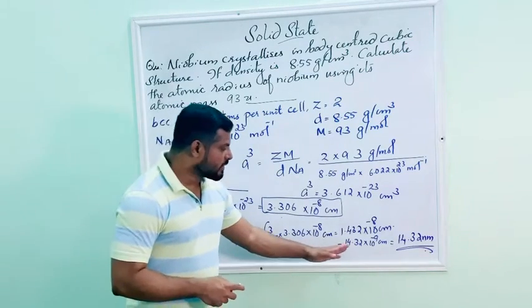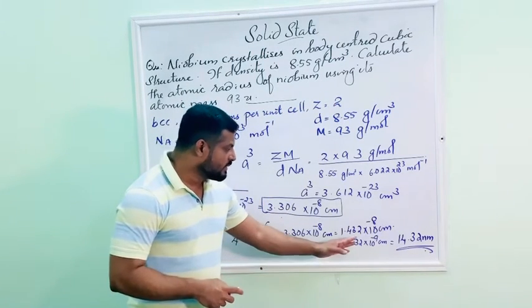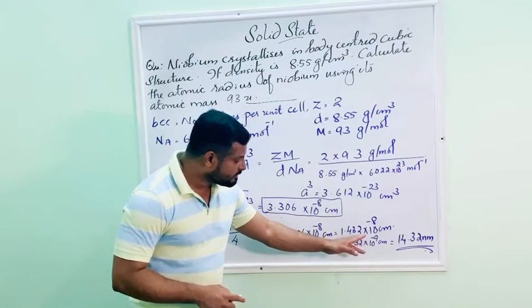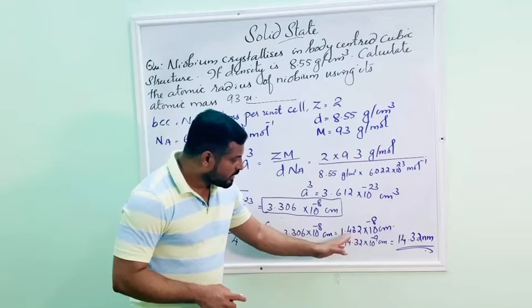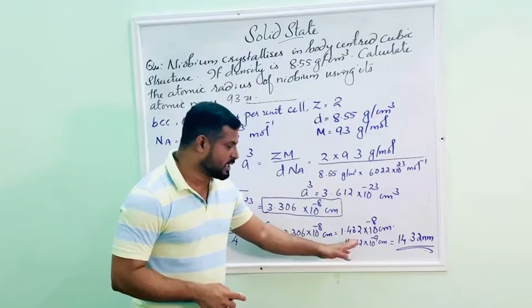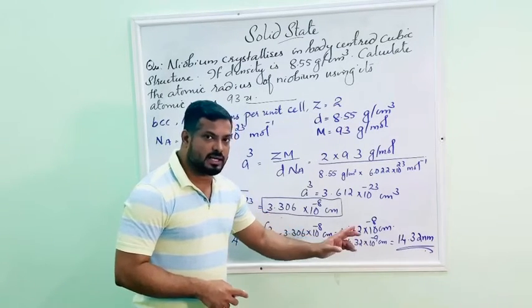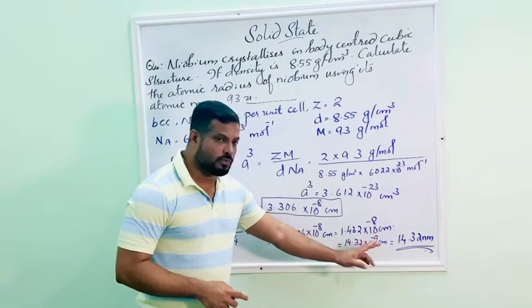Then, you will get the answer 1.432 into 10 raise to minus 8 centimeter. For writing the atomic radius, it is better to write in nanometer unit. So, 1.432 into 10 raise to minus 8, I am writing as 14.32 into 10 raise to minus 9. 10 raise to minus 9 centimeter equals 1 nanometer.